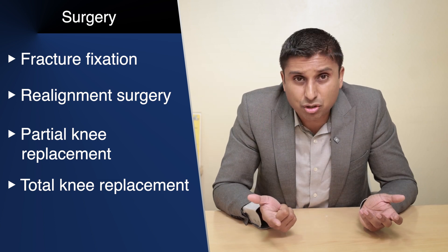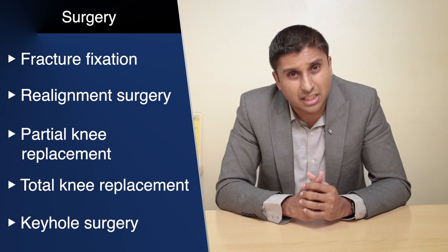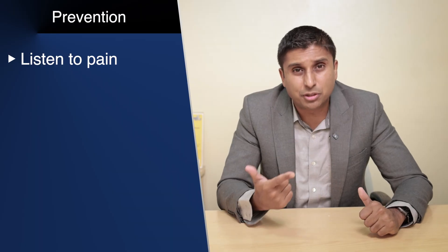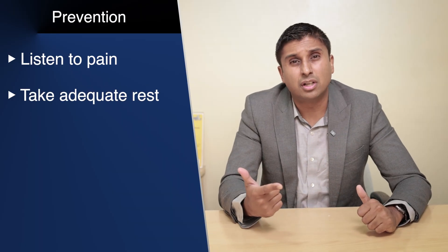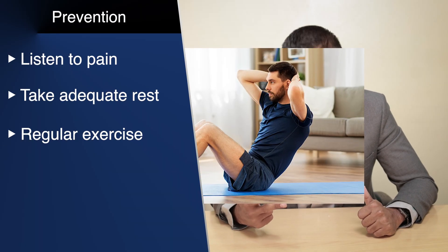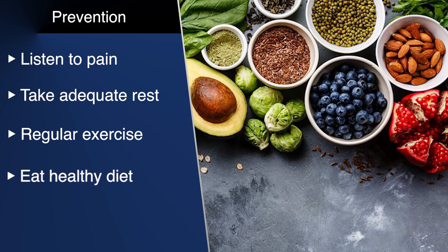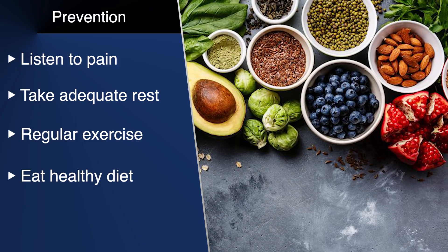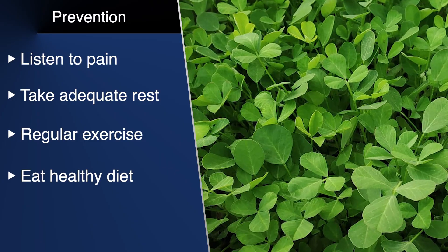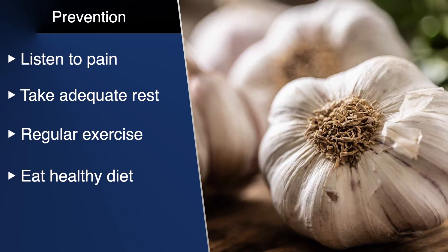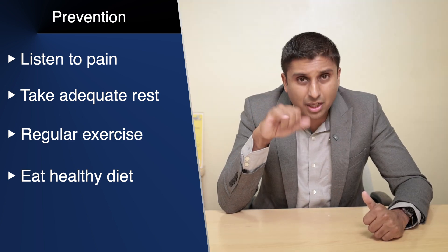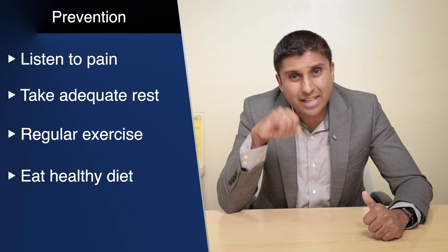How can you prevent knee pain? Number one: listen to your knee — listen to pain and swelling. Number two: rest it adequately if you're a sports person. Number three: exercise regularly, especially your thigh and hip muscles. Number four: eat healthy. It's very important to eat antioxidant foods like turmeric, methi, and garlic — these can help to a great extent. Also make sure you keep your weight under control, because the greater the weight, the more load on your joint.